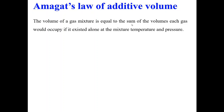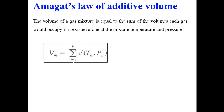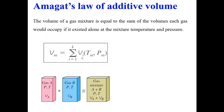Another law is Amagat's law of additive volumes. It states that the volume of a gas mixture equals the sum of the volumes each gas would occupy if it existed alone at the mixture temperature and pressure. So Vm = ΣVi. For example, mixing gas A at volume Va with gas B at volume Vb at constant pressure and temperature gives a mixture volume equal to Va + Vb. This is the essence of Amagat's law.